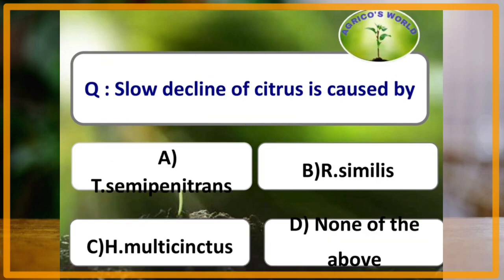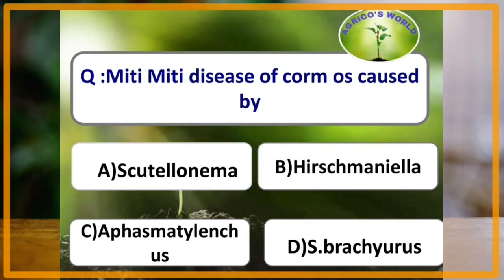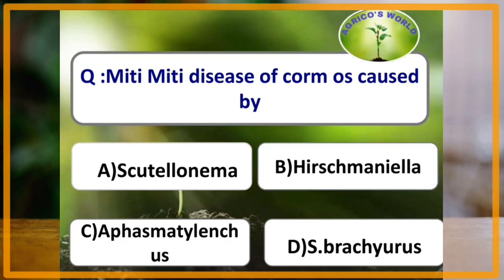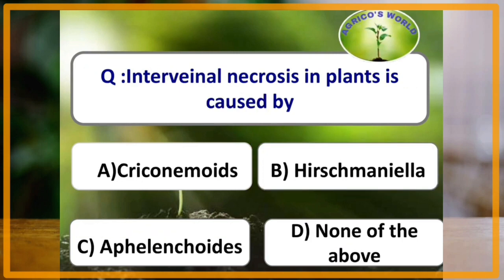Slow decline of citrus is caused by Tylenchorhynchus semipenetrans. Miti miti disease of corn is caused by Hirschmanella miticoda. Intravenal necrosis in plants is caused by Hirschmanella.